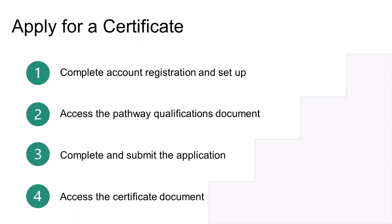Let's review the steps covered in this tutorial. First, complete the account registration and setup process described in the Account Registration User Guide and Training Video, located on the Your DEQ Online Help page. Next, access the Pathways Qualification document from the Wastewater Operator Certification Program page to consult the qualification tables. Applicants will need to know their pathway details to complete the certificate application. Third, in Your DEQ Online, select Start New Submittal to complete and submit the certificate application. Once the submittal is approved by DEQ, access the certificate document.